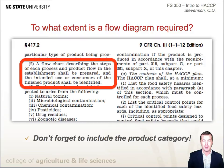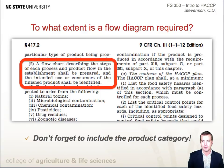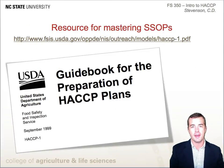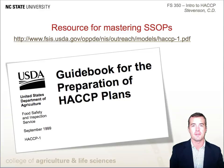To what extent is a flow diagram required? While the FDA does not necessarily state the requirements of a flow diagram in the Code of Federal Regulations, the FSIS does. In Title 9, Part 417.2, it states a flow chart describing the steps of each process and product flow in the establishment shall be prepared, and the intended use or consumers of the finished product shall be identified. You should be aware that it is common practice to also include the product category for FSIS regulated products. There are many resources for helping you develop your flow diagram available on the internet. In particular, the FSIS provided a guidebook for the preparation of HACCP plans. I encourage you to look at these materials as you develop your HACCP plan flow diagram.